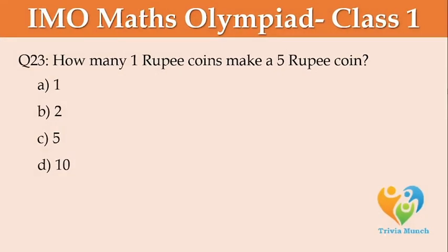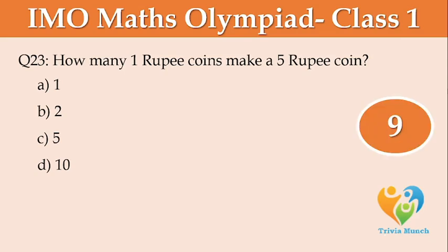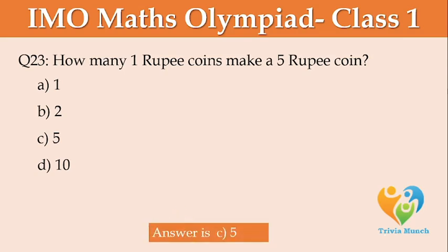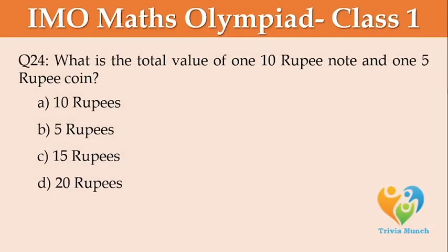How many 1 rupee coins make a 5 rupee coin? Option A: 1, Option B: 2, Option C: 5, Option D: 10. What is the total value of 1 ten-rupee note and 1 five-rupee coin? Option A: 10 rupees, Option B: 5 rupees, Option C: 15 rupees, Option D: 20 rupees.